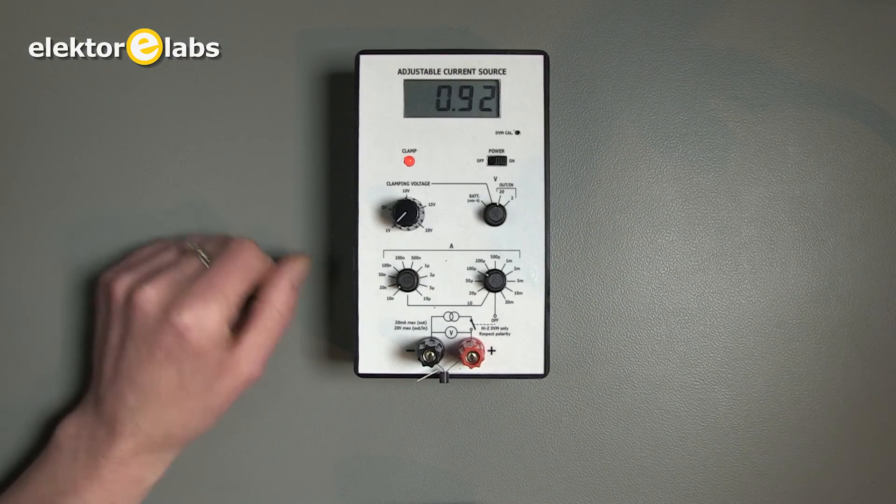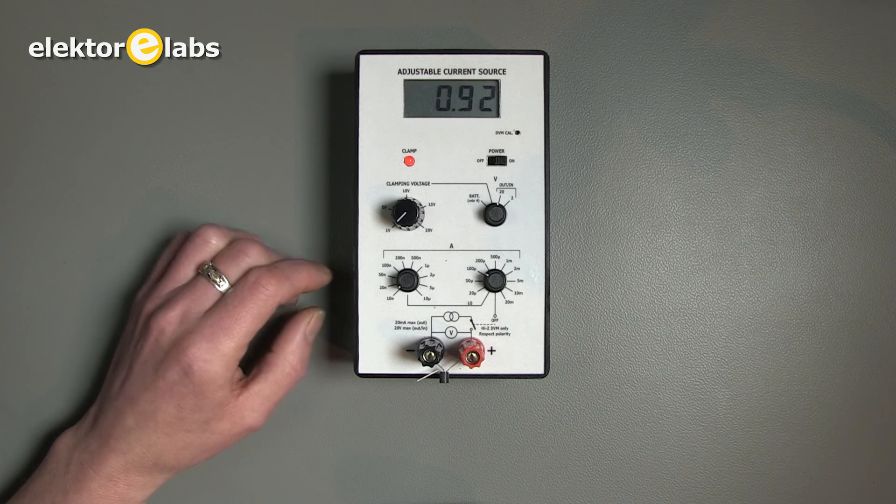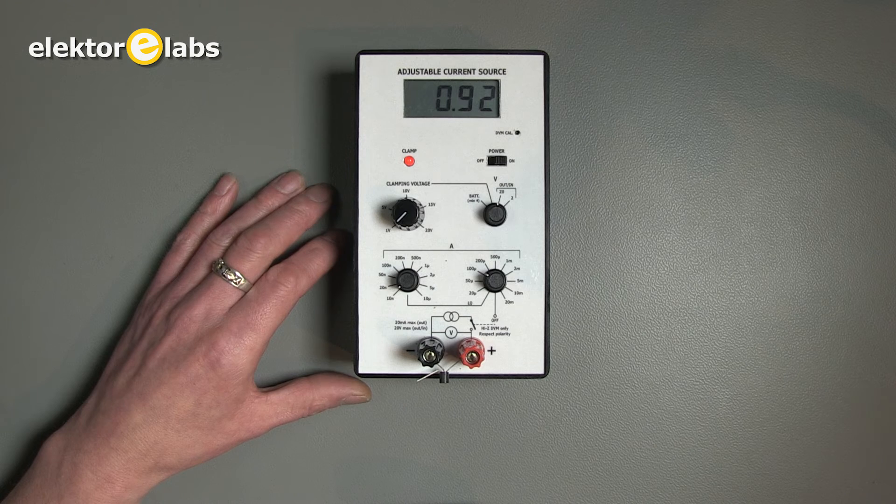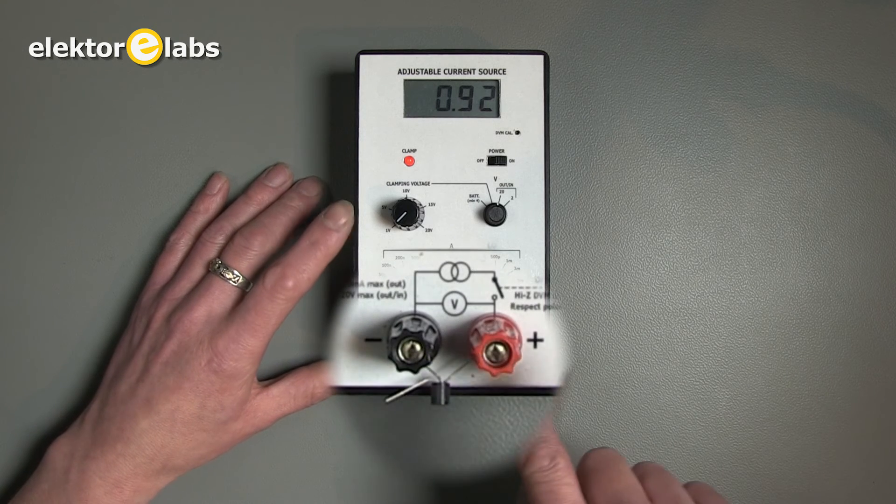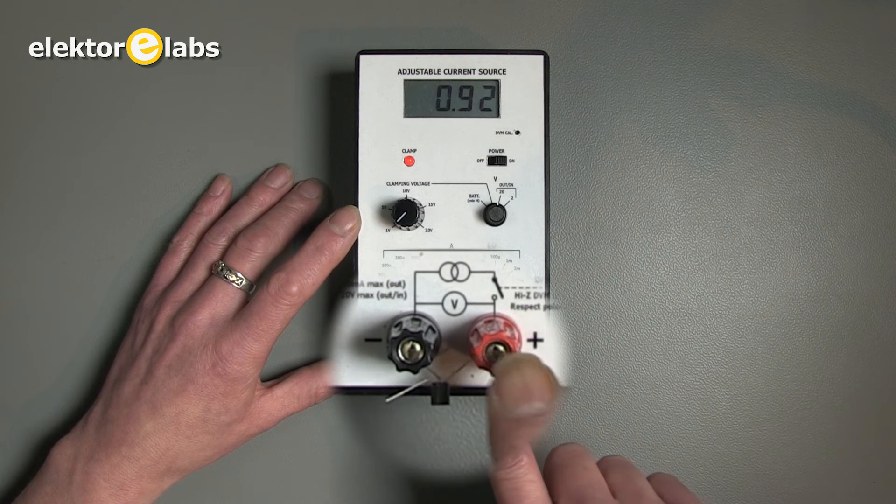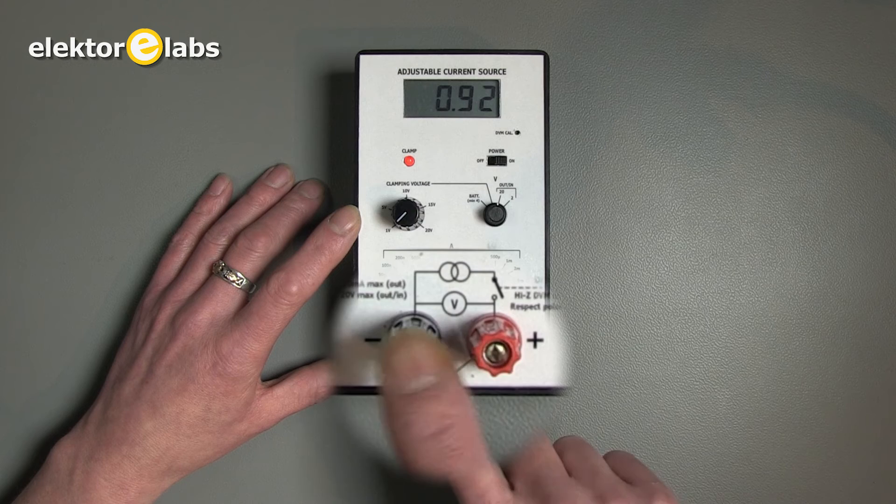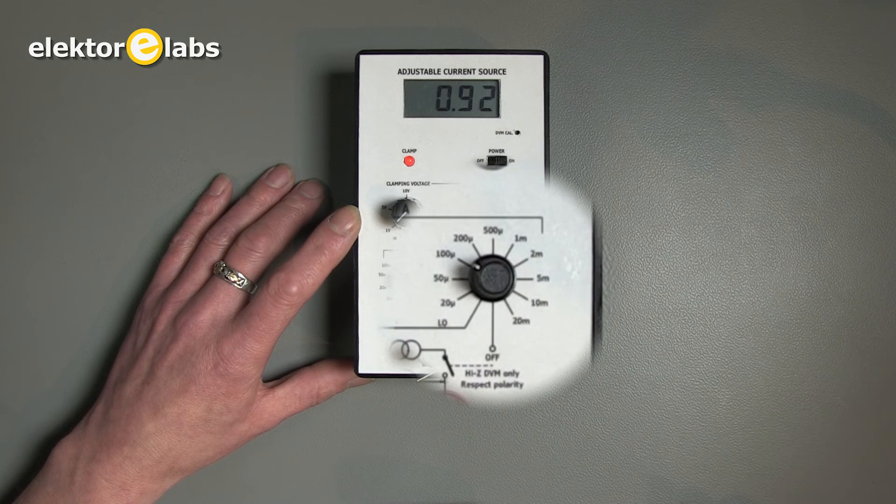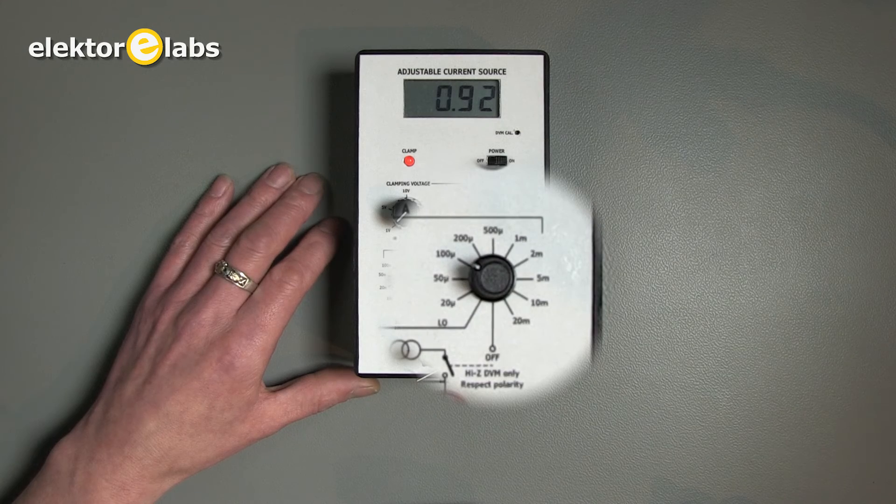Now we are going to measure the avalanche voltage of a base emitter junction of a simple NPN transistor. I have connected the emitter base junction in reverse, and set the current source to 100 microamp.